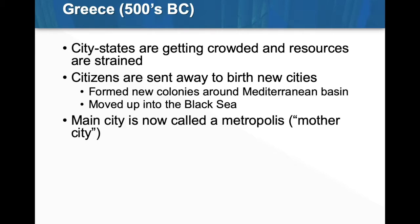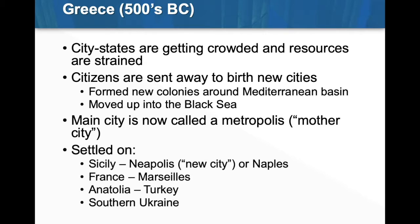The metropolis means mother city. On the screen there are a couple of settlements as examples. You see Sicily — they have Neapolis, which means new city, or Naples. France: they settle in Marseilles, southern France. Anatolia, which is in Turkey — there are a lot of settlements that take place on Anatolia. And then southern Ukraine, which is up in the Black Sea area — they begin to settle up in there. So they're spreading out.